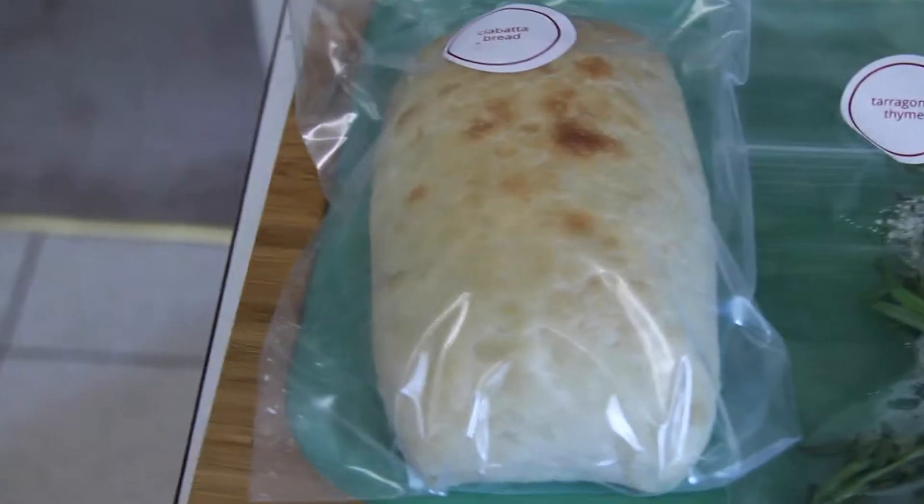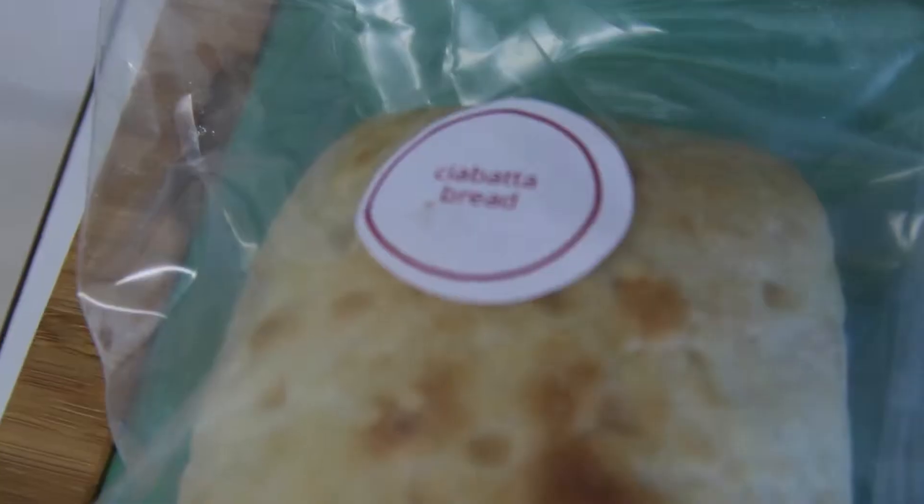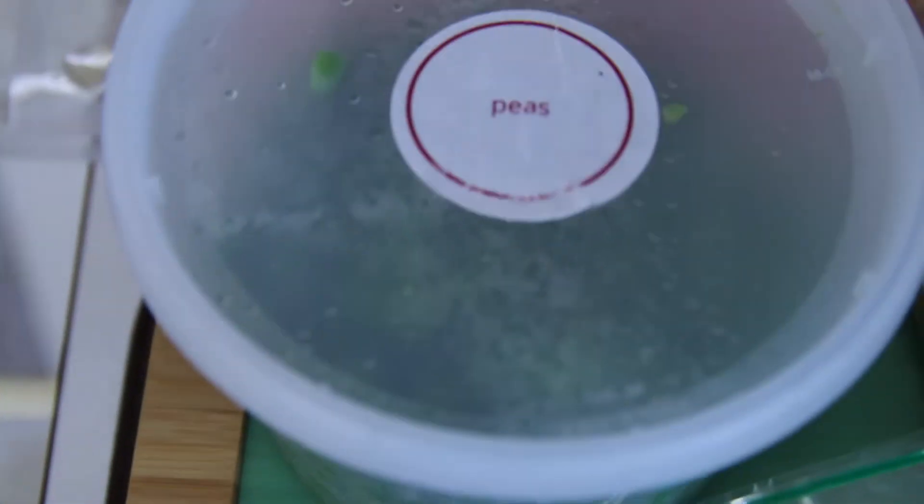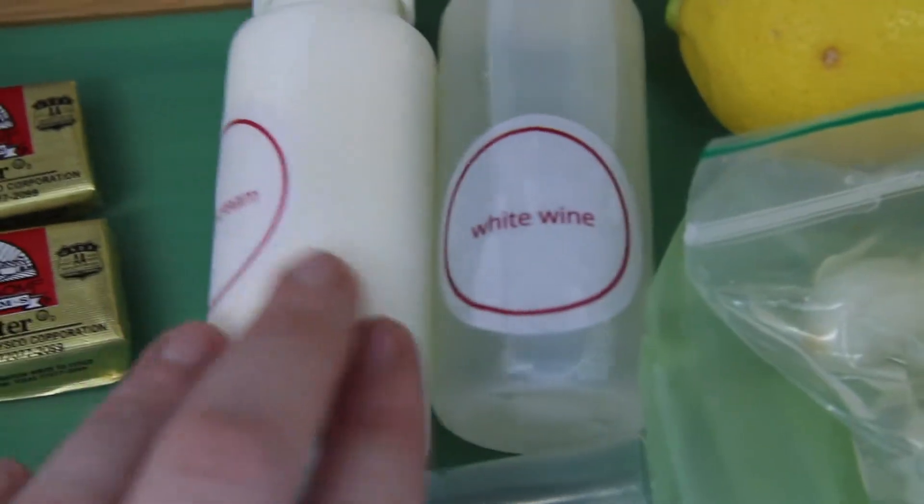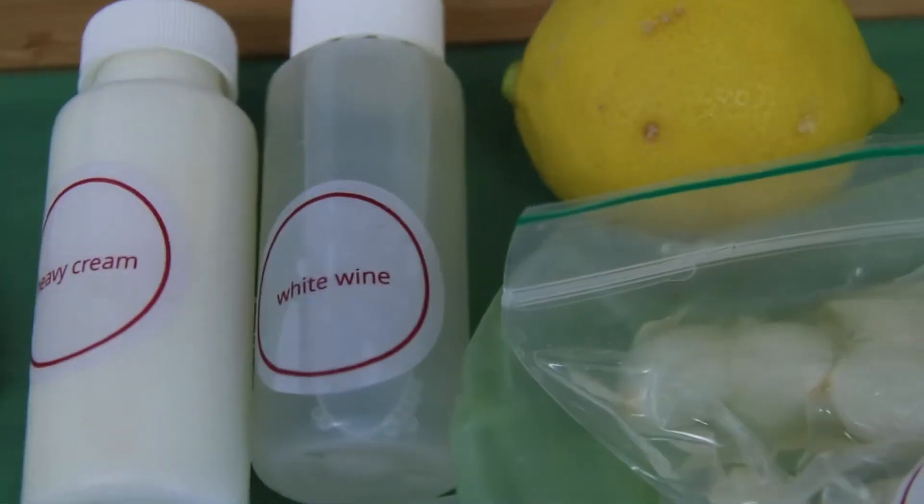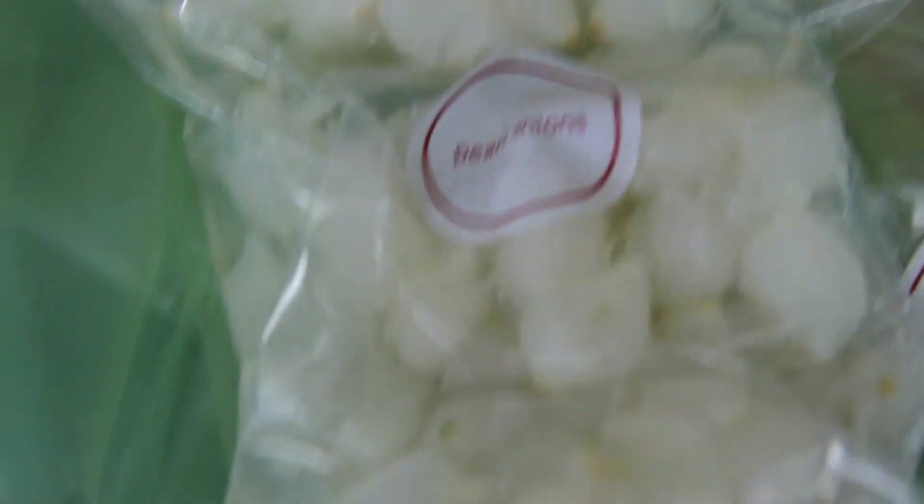I'm going to apologize in advance. There are two cats that live here so if you hear random meowing, it's them. So let's begin. For this plated meal, we're going to need ciabatta bread, peas, two things of butter, heavy cream, white wine, a lemon, pearl onions, tarragon and thyme, two packs of salmon.